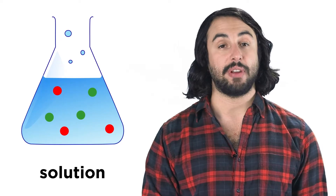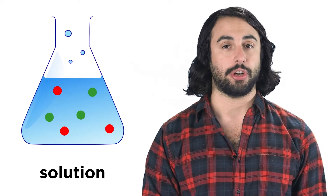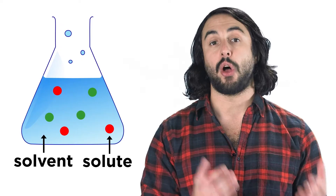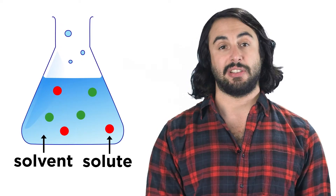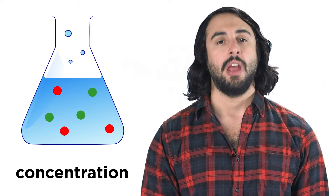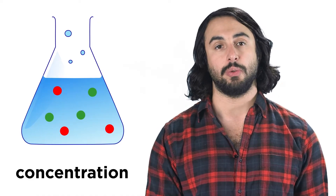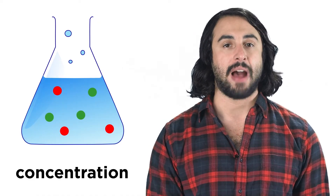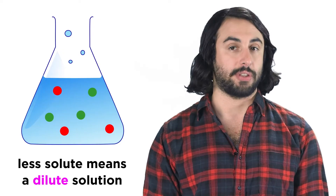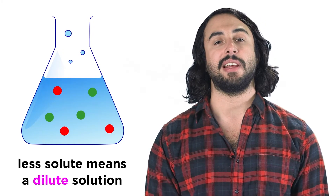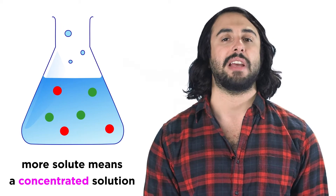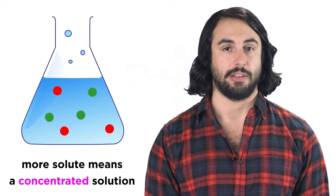In chemistry, we know that we can create a solution by placing some solute into some solvent, and we know that the solution will be of some concentration depending on how much solute there is relative to the amount of solvent. If there is very little solute, we say the solution is dilute. If there is a lot, we say the solution is concentrated.